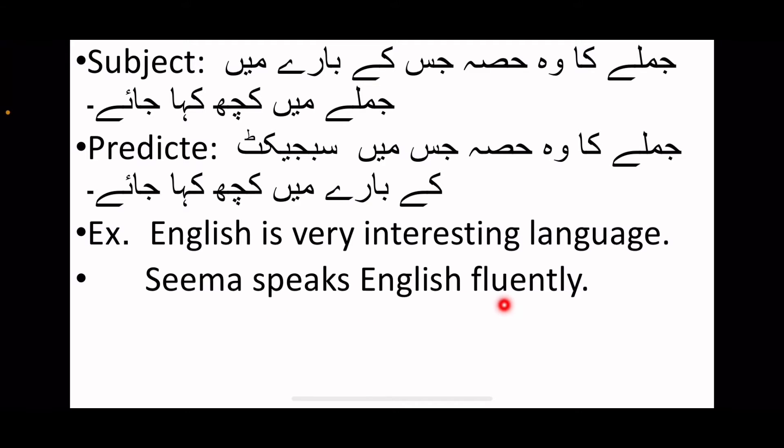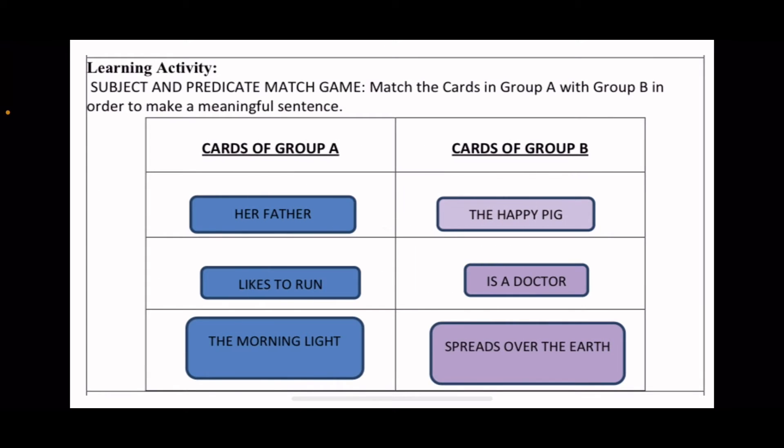In this sentence, Seema speaks English fluently. Seema here is the subject, but the whole part about Seema is called predicate. The part which is about the subject is called predicate. Keep this in mind to understand the activity.